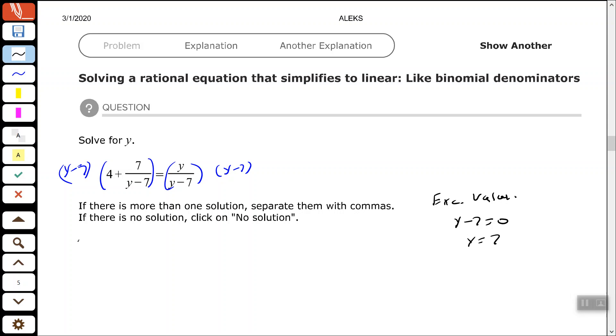All right, so we have y minus 7 times 4 using distributive property, and then 7 over y minus 7 times y minus 7 equals y over y minus 7 times y minus 7.